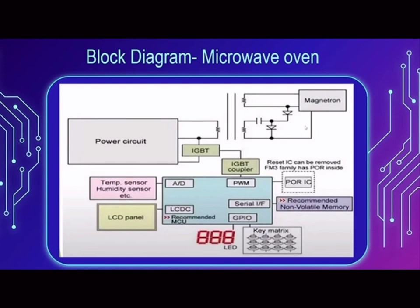This block diagram indicates the structure of a microwave oven. It contains various components such as the power circuit, IGBT, IGBT coupler, magnetron, PWM, serial interface, GPIO, LED, key matrix, LCD panel, humidity and temperature sensors, and recommended non-volatile memory.